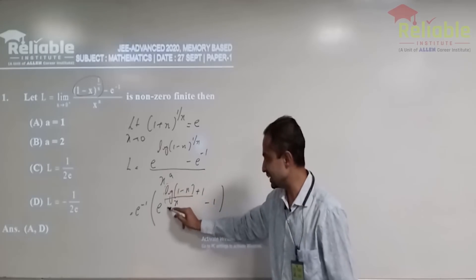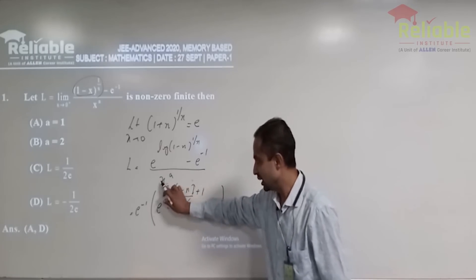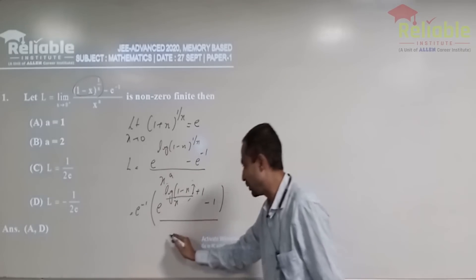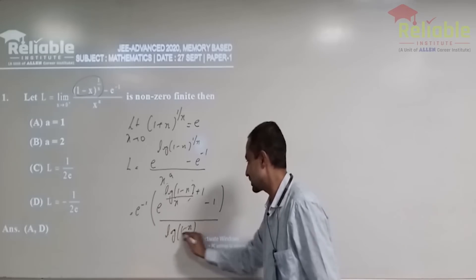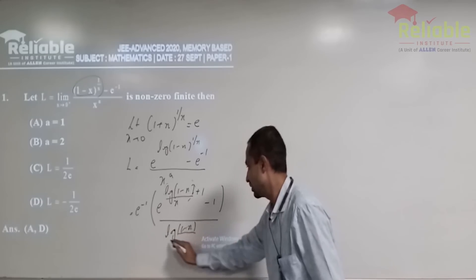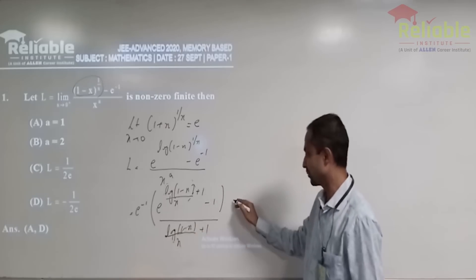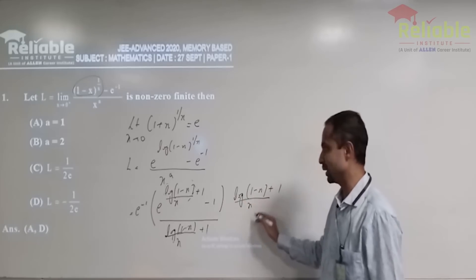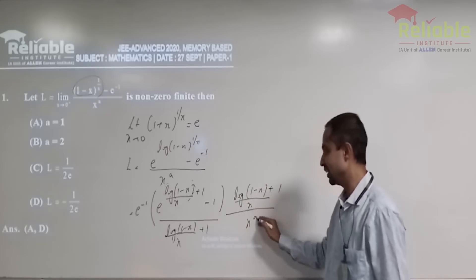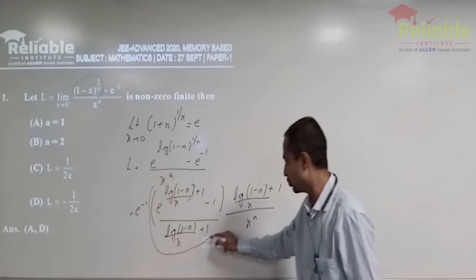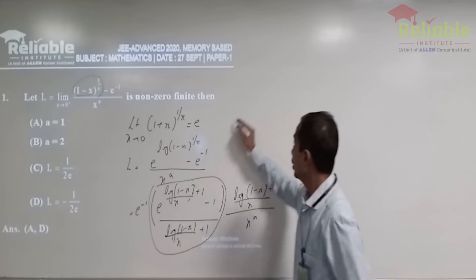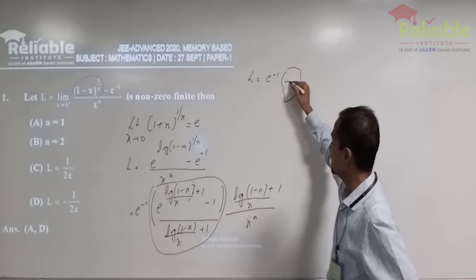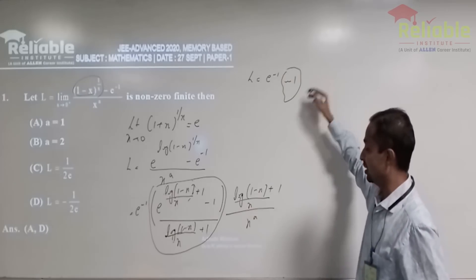So what you are going to get is plus 1 minus 1. Now since this is minus 1, so e ka jo exponent hai that is tending to 0. So let us divide by log of log of 1 minus x by x plus 1 and we have to multiply 1 minus x by x plus 1 and x to the power a. Essentially, this goes to 1. So l is equal to e^minus 1, this whole stuff which is tending to 1 and let's apply Maclaurin series.